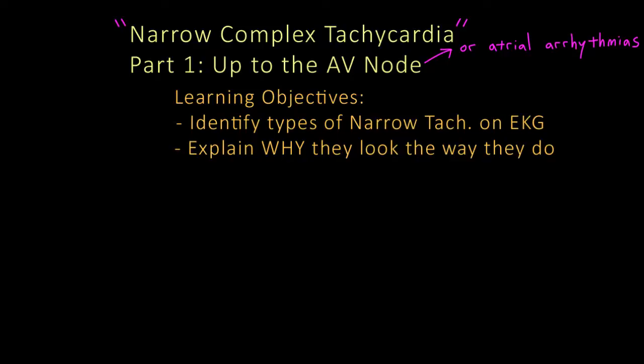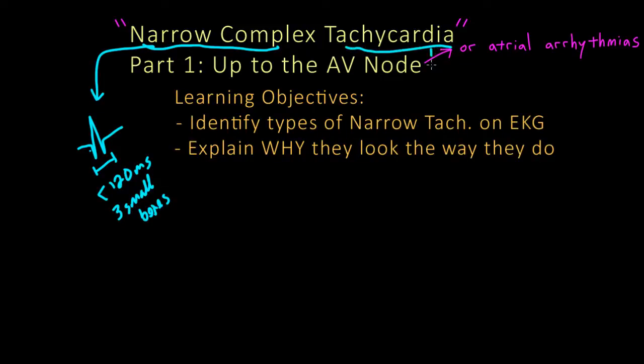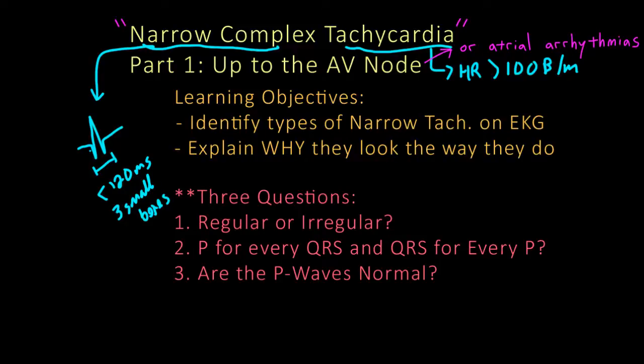Let's start by defining narrow complex tachycardia. By narrow complex, we mean that the QRS complex is less than 120 milliseconds in duration, or three small boxes. Tachycardia means that the heart rate is greater than 100 beats per minute, or on average, three large boxes between RR interval. And if you find an EKG that fulfills these criteria, you only have to ask yourself three questions to get to the diagnosis. First, is it regular or irregular? Second, is there a P for every QRS and a QRS for every P? And third, are the P waves normal?